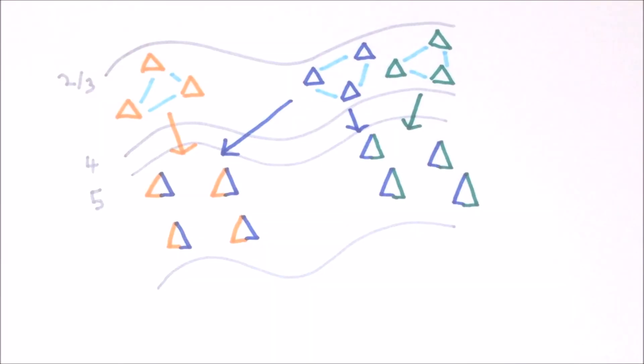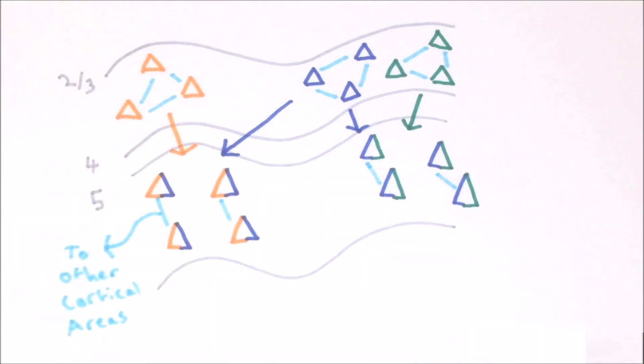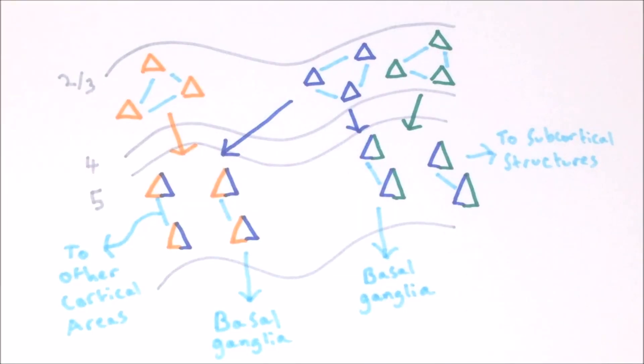Neurons in layer five receive input from different sub-networks in layers two and three, and they also form sub-networks connecting preferentially to other layer five neurons with the same inputs. Layer five neurons also form sub-networks based on their long-range connections, with neurons that project to the same part of the brain preferentially connecting to each other. Layer five contains two main types of excitatory neurons: cortico-cortical neurons, which project to other areas within the cortex, and cortico-subcortical neurons, which project to other subcortical structures including the thalamus. Both types of layer five neurons project to the basal ganglia.